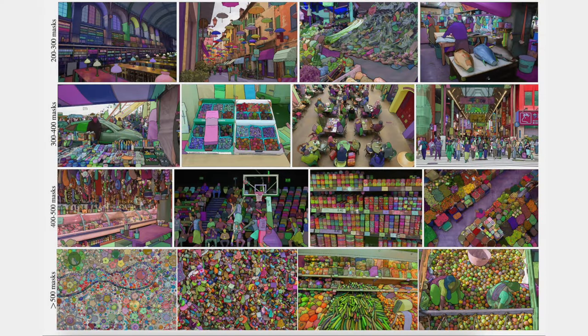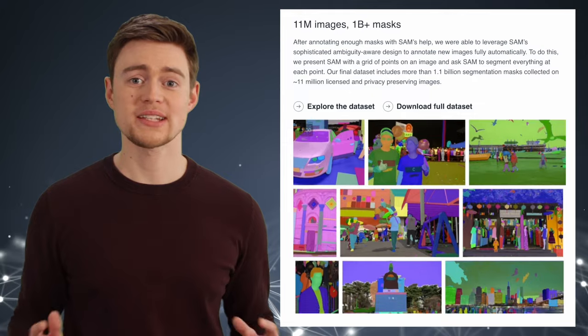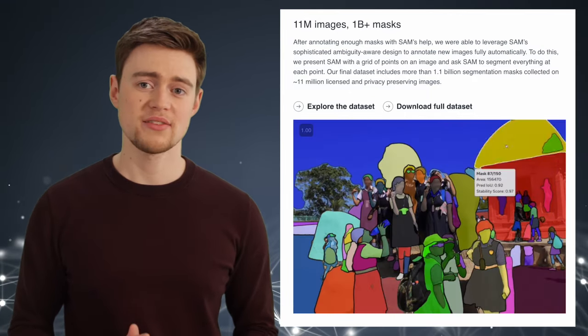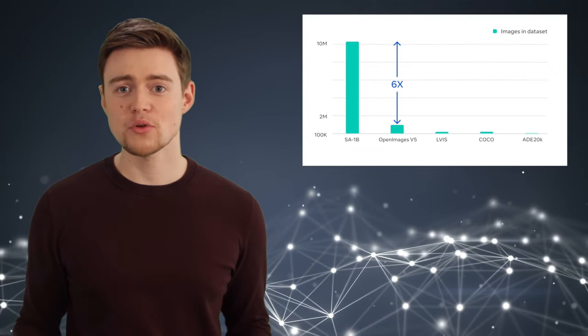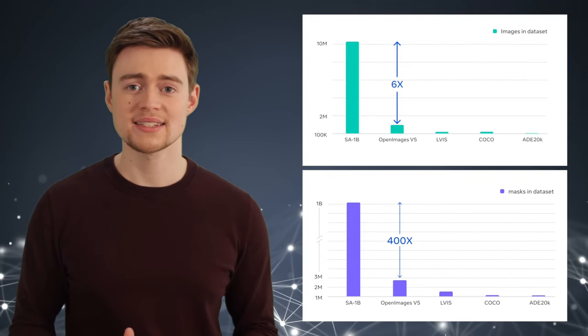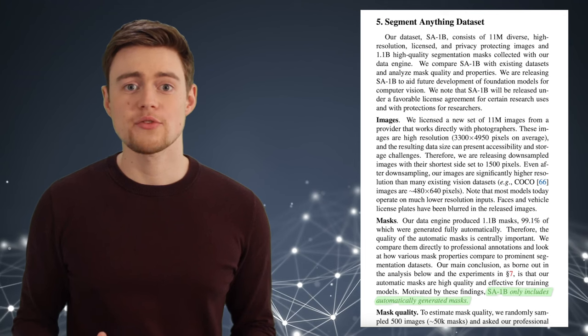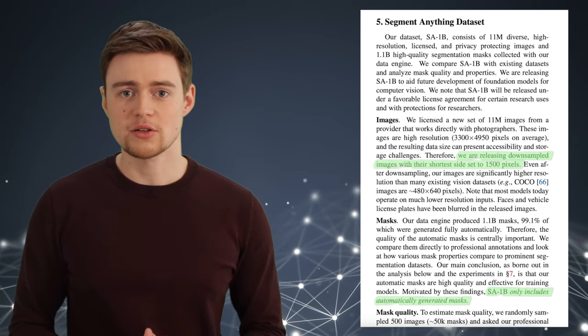You can see some complex images where SAM predicted more than 500 masks, and the examples look pretty good. The final dataset is called SA-1B, and Meta is making it publicly available under a permissive license. It has 6 times more images and 400 times more masks than any existing segmentation dataset — a big contribution to the field. Note that it includes only images from the fully automatic stage, and the images are slightly downsampled compared to what SAM was trained on.